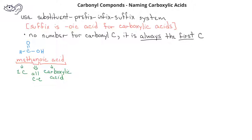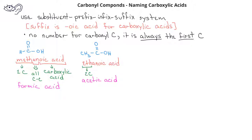The common name for methanoic acid is formic acid. If we have a total of two carbons, including the carbonyl carbon, this would be known as ethanoic acid. However, most of the time people refer to this compound by its common name, acetic acid. If we have a three-carbon chain, including the carbonyl carbon, this would be propanoic acid, or it could be known by the common name, propionic acid.